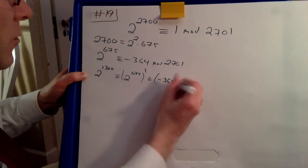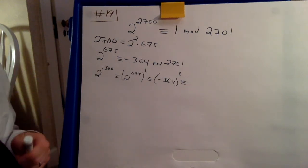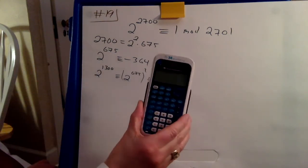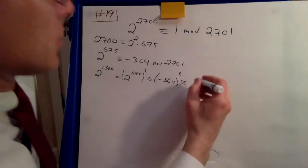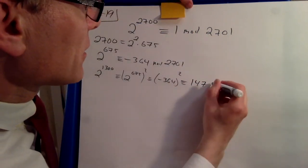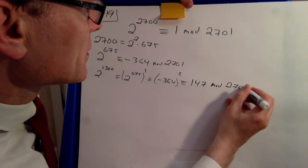So this is the square of 364 squared. And now for this calculation, best to use electronic machines. And we get that this is 147 mod 2071.